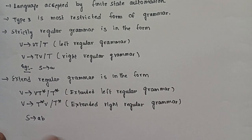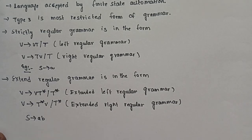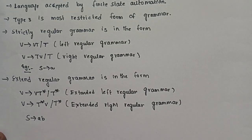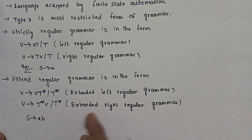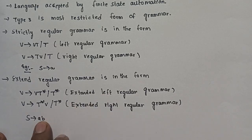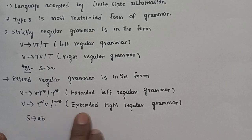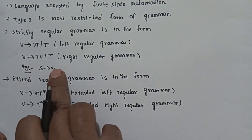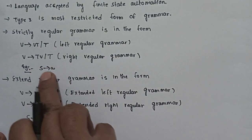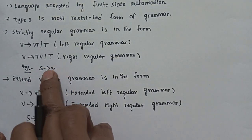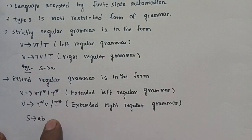For example, S → ab is an extended production because it repeats terminals a and b. S → only one terminal is a strictly regular example. These are examples for type 3 grammar.